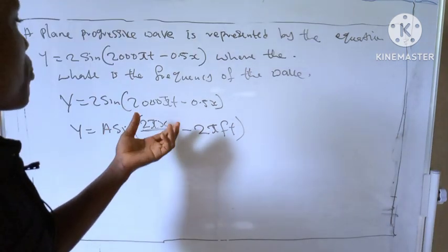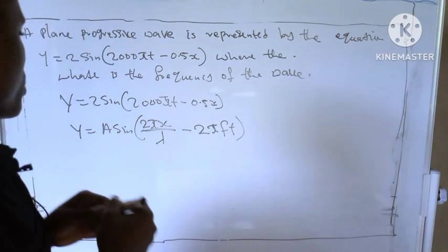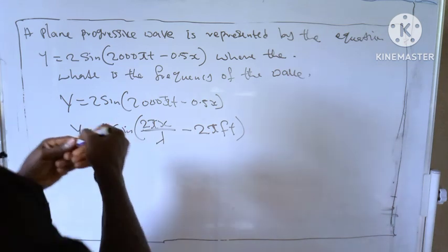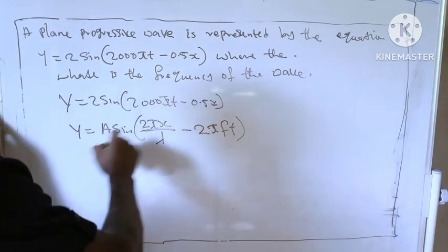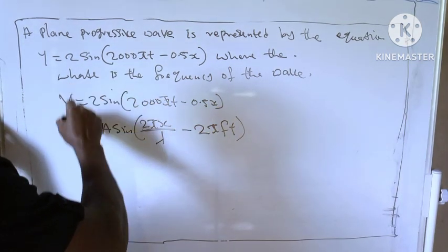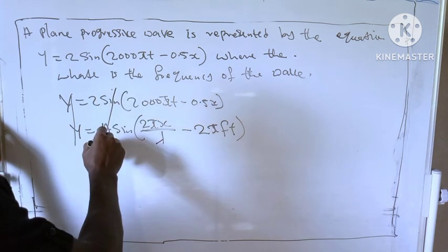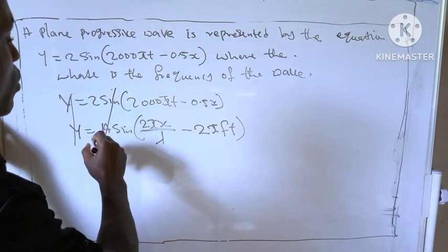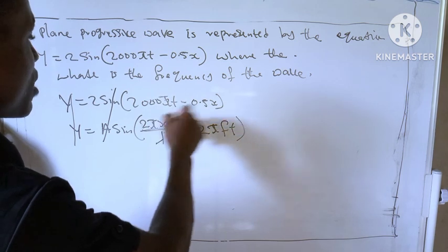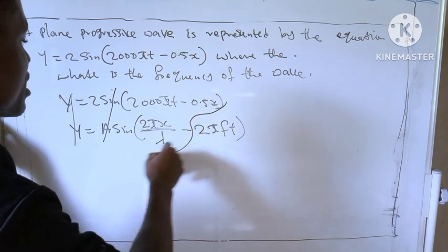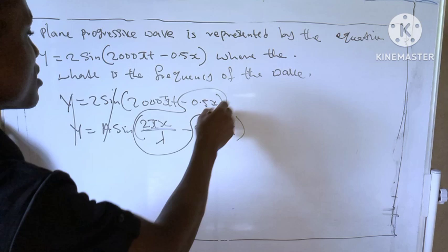Are you getting it? So let's compare these two formulas together. So what we do is from here to here they will cancel each other. So even here we have x, so we cancel everything here together, here to here together.